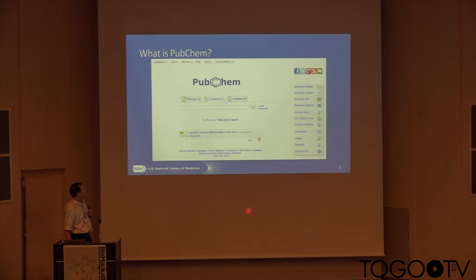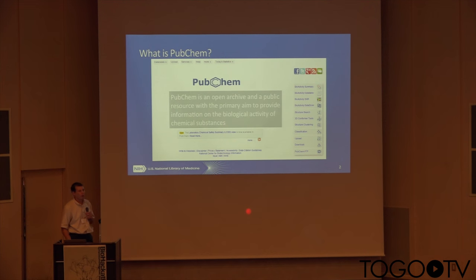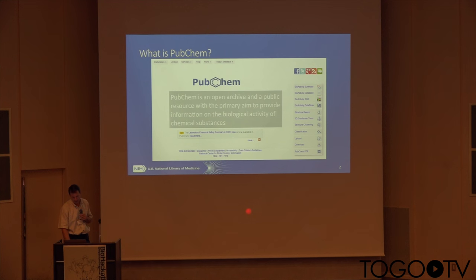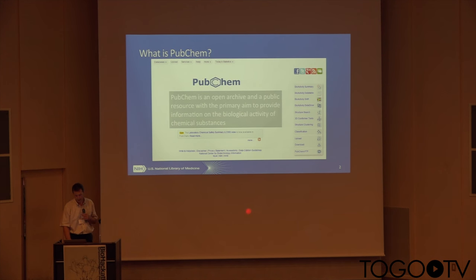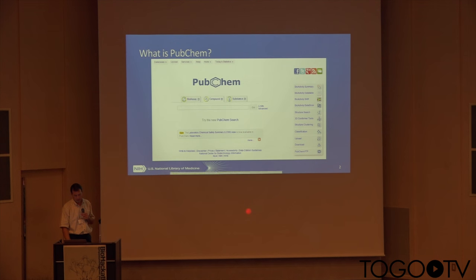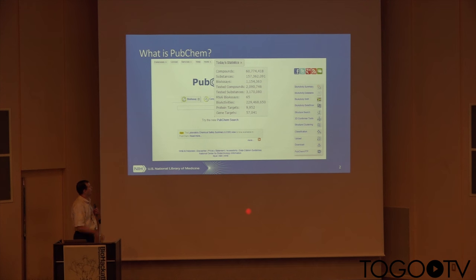We are an open archive that people contribute information into, and we have biological activities — experiments performed on chemical substances, which may or may not be well defined. A chemical substance could be a chemically modified protein, RNA sequence, nucleotide, and so on. We have tens of millions of small molecules, hundreds of millions of biological data points, touching many genes, protein targets, and so on.